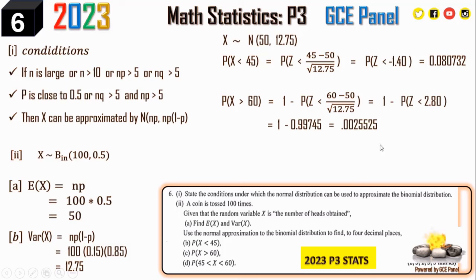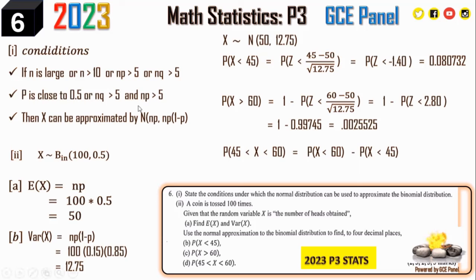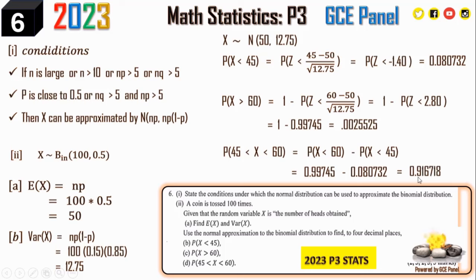For P(45 ≤ X ≤ 60) = P(X < 60) − P(X < 45) = 0.9772 − 0.1587 = 0.8185. All answers must be given to four decimal places as instructed.